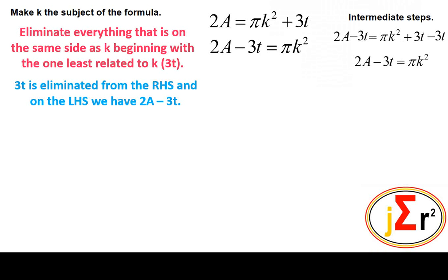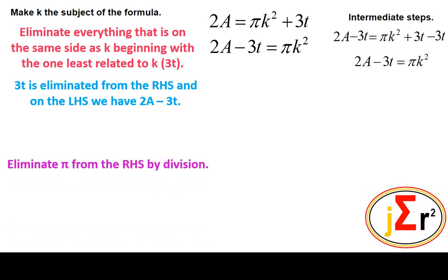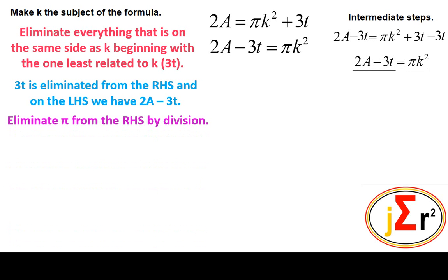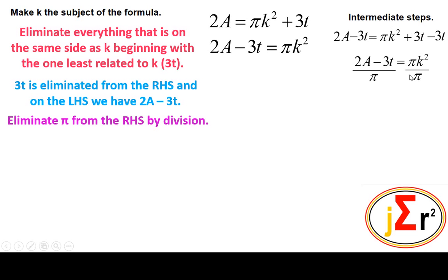The next thing to eliminate is π. It is related to k by multiplication, so we eliminate π by division — dividing by π on both sides. Whatever we do to one side of an equation to change its value must be done to the other side in the same way. π is therefore eliminated from the right hand side, and on the left hand side we now have (2a − 3t) / π.